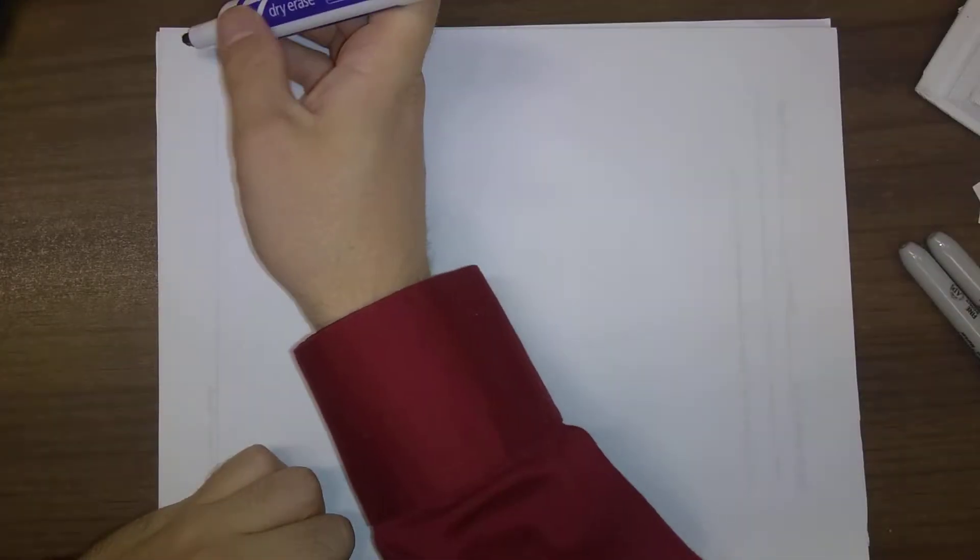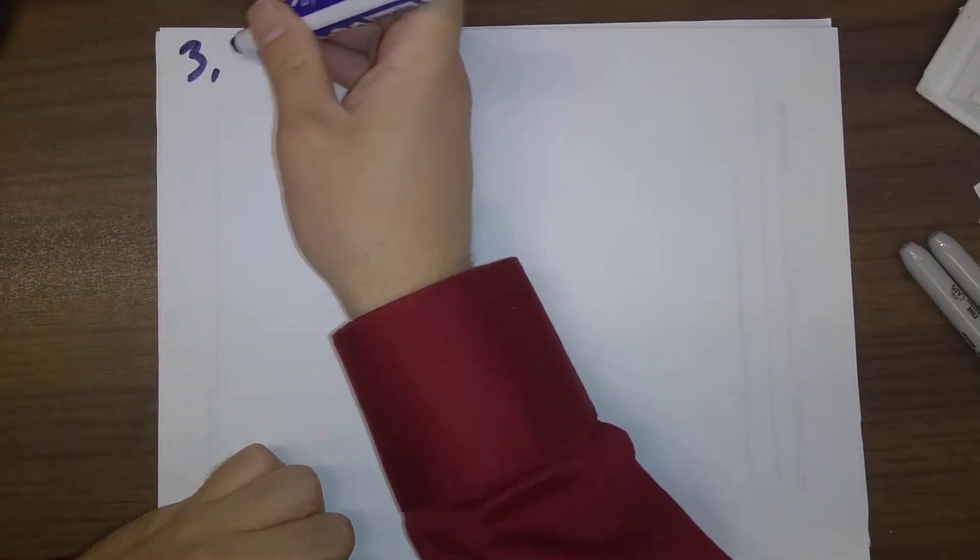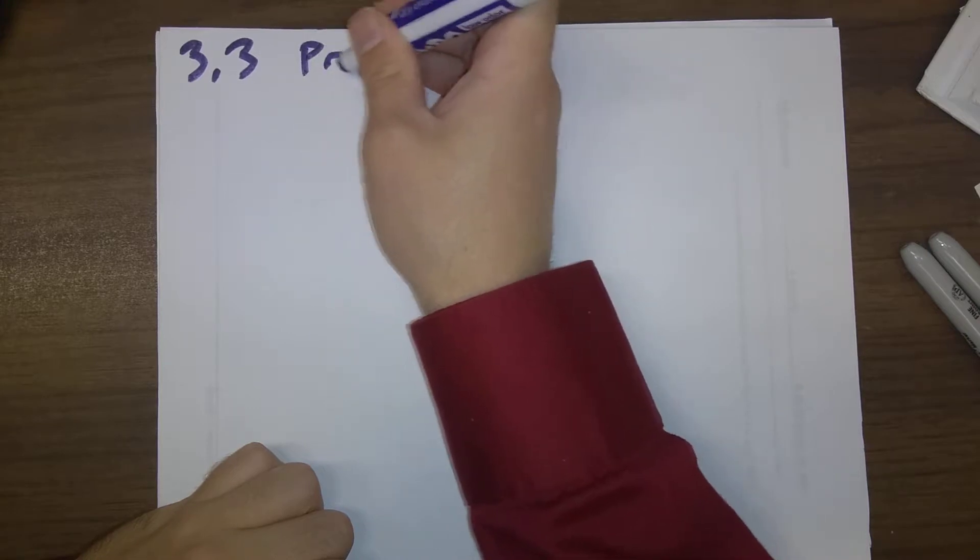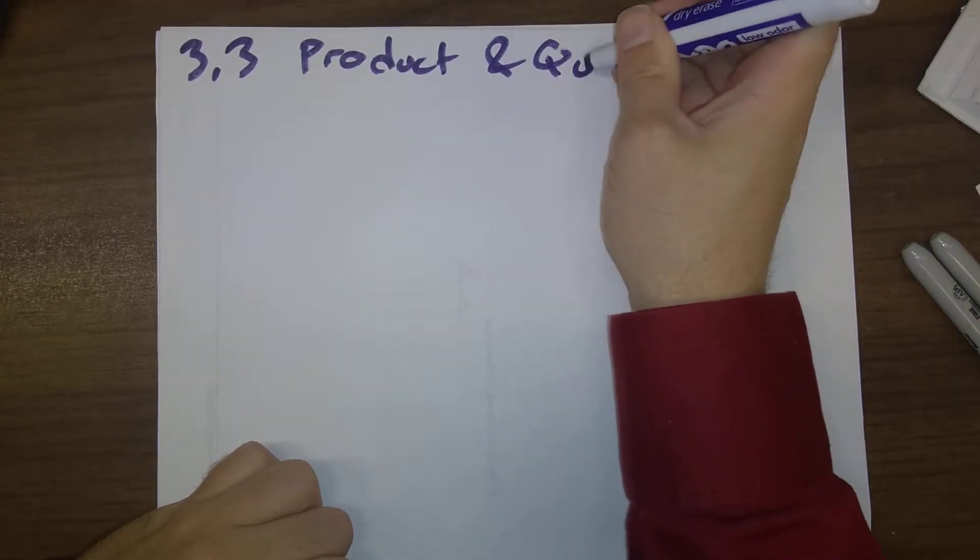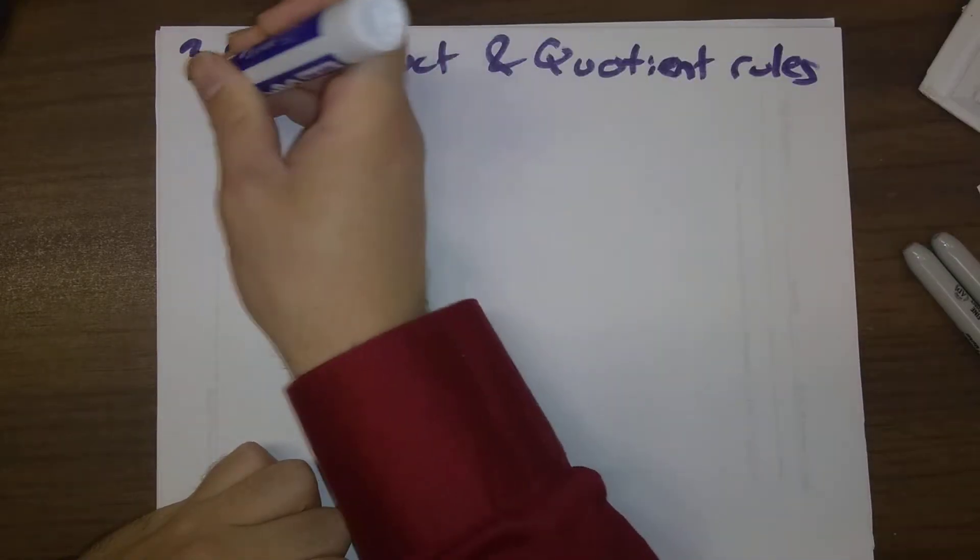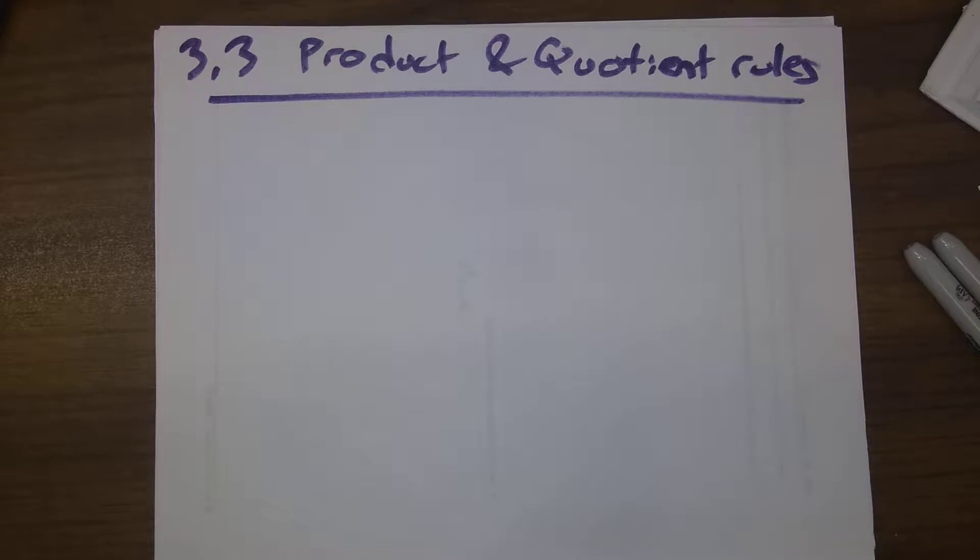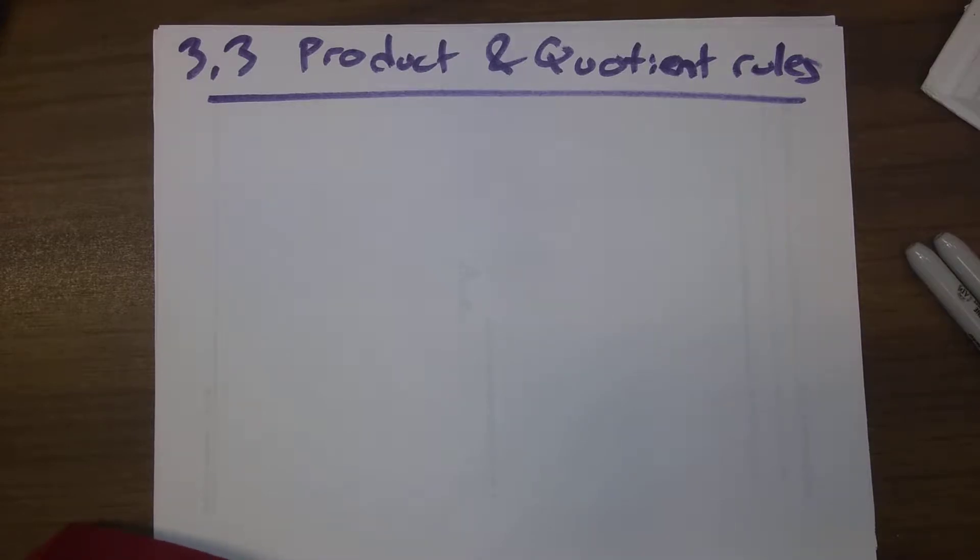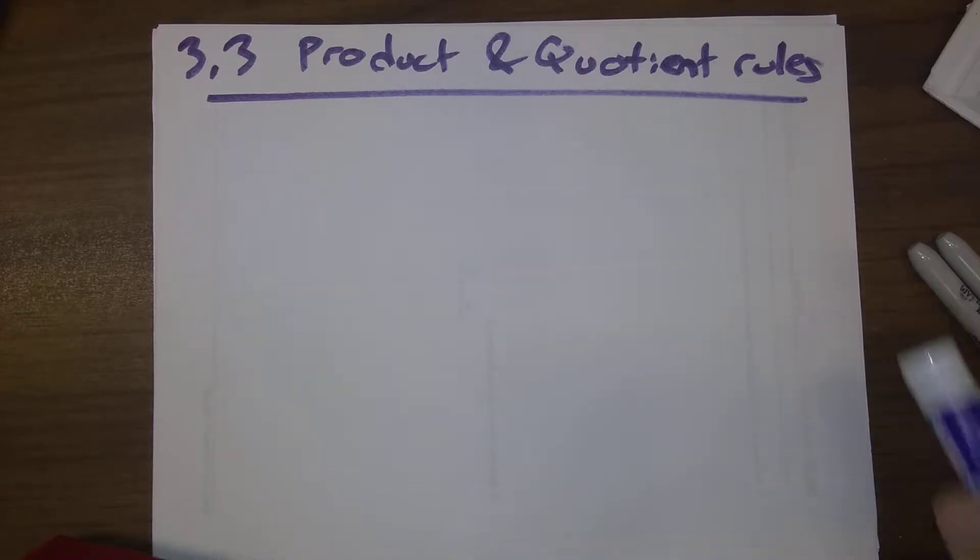We're going to continue looking at a listing of derivative rules in section 3.3 on the product and quotient rules. Most of the rules that we've seen so far for derivatives are exactly what we'd expect. The derivative of a sum is the sum of the respective derivatives. The derivative of a constant multiple times a function is that constant times the derivative of the function.